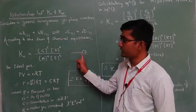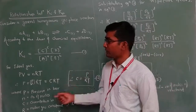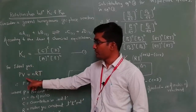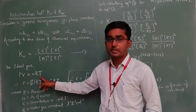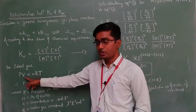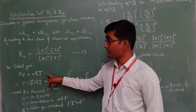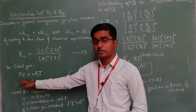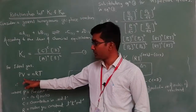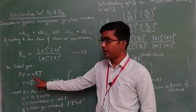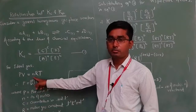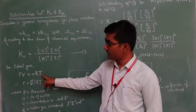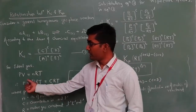For an ideal gas, we use the ideal gas equation: PV = nRT. The gas which obeys this equation is called an ideal gas. Here, P stands for pressure, V for volume, n for number of moles, R for the molar gas constant, and T for temperature.